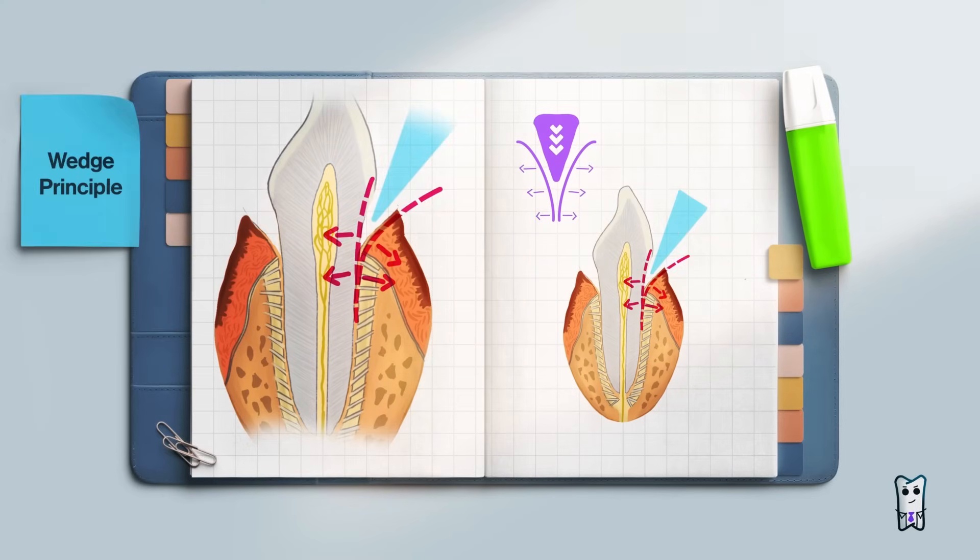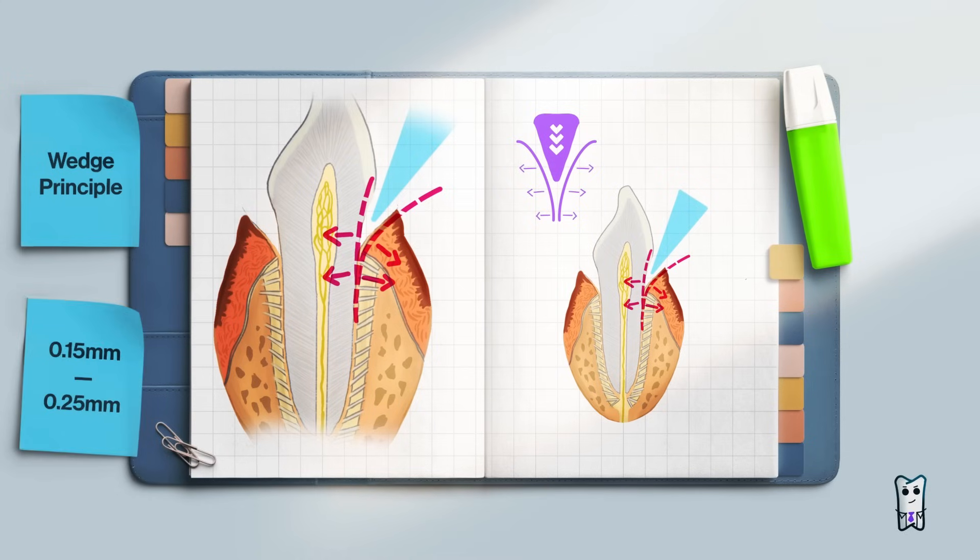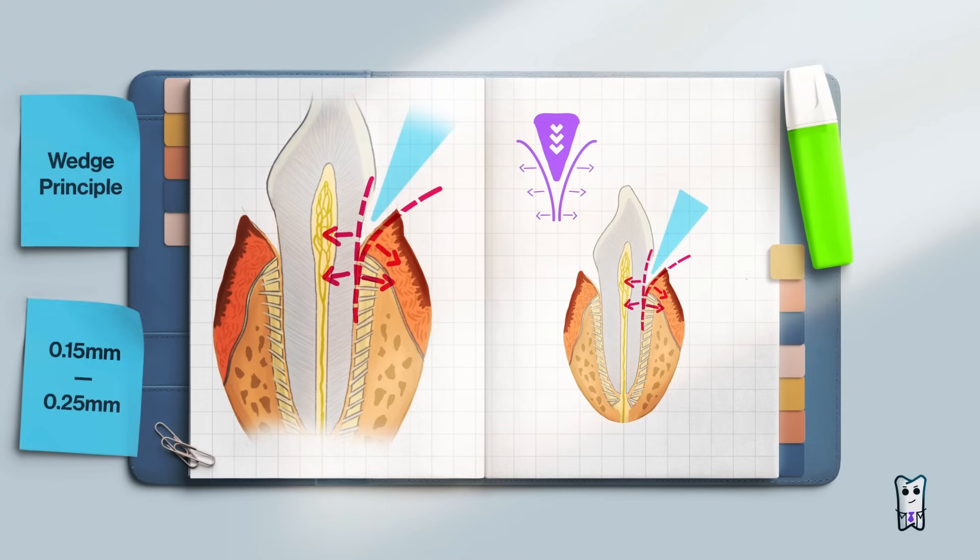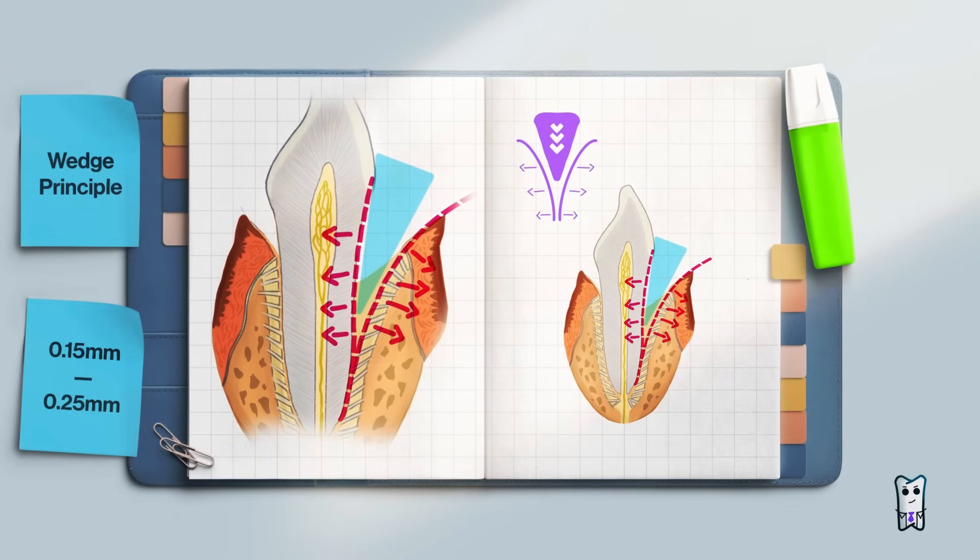This is the wedge principle. The width of the periodontium is very narrow, between 0.15 and 0.25 millimeters. In the area where the tip of the elevator is wedged, the periodontal space widens and the periodontal fibers are torn.